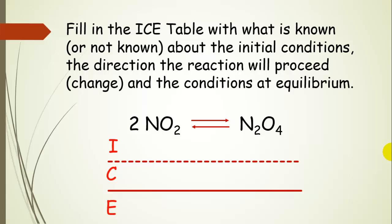The first thing you do when starting an equilibrium problem is write an ICE table and fill in what is known or unknown about the initial conditions, the direction the reaction proceeds, and the conditions at equilibrium. Always start by writing the reaction at the top, then ICE, and then we'll see how to fill it in and use it.